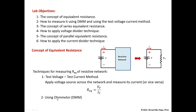The second technique is using the ohmmeter, which is the DMM. Connect the DMM across the resistive network. The DMM does the same thing — it sends a current and measures the voltage, giving V over I which equals R-equivalent. From a practical standpoint, we use the DMM to measure resistance across the network. Those are the two techniques used in the lab to measure R-equivalent.